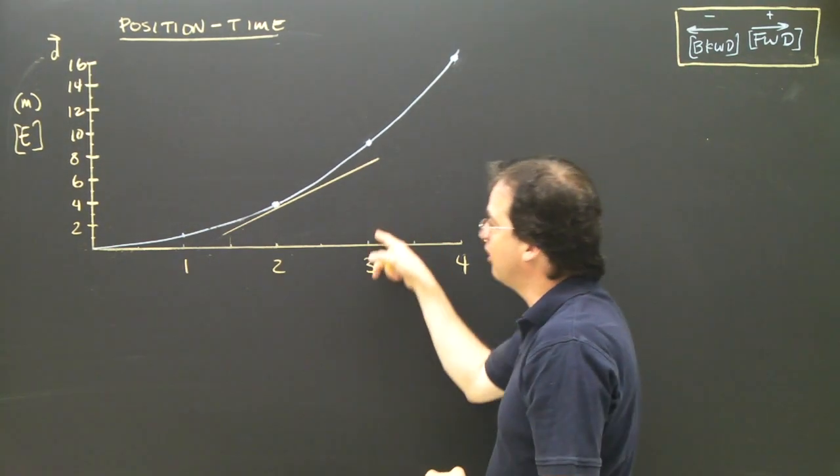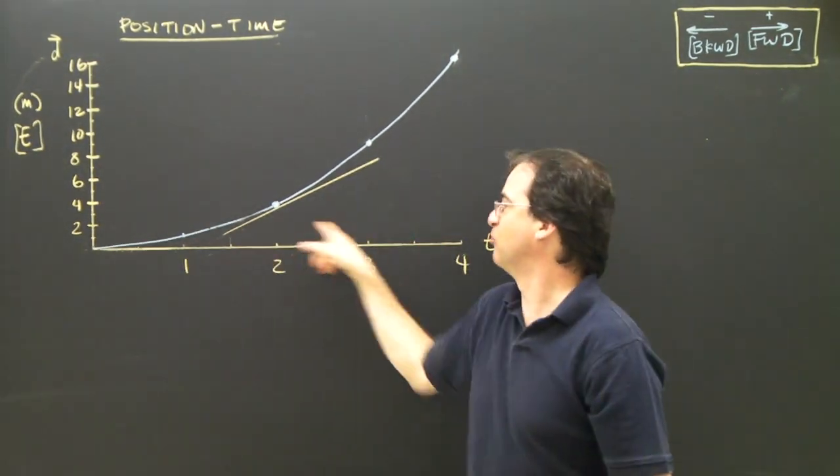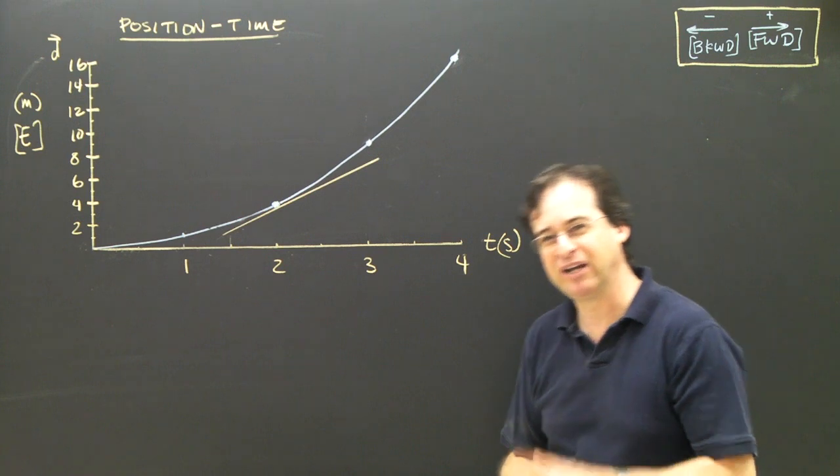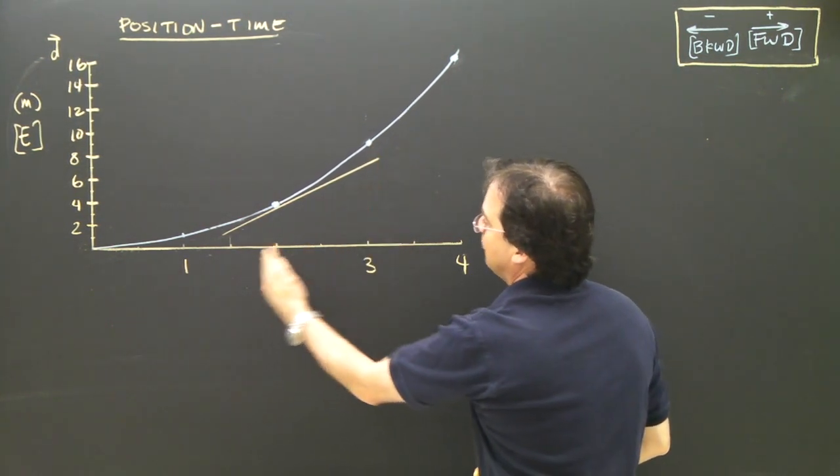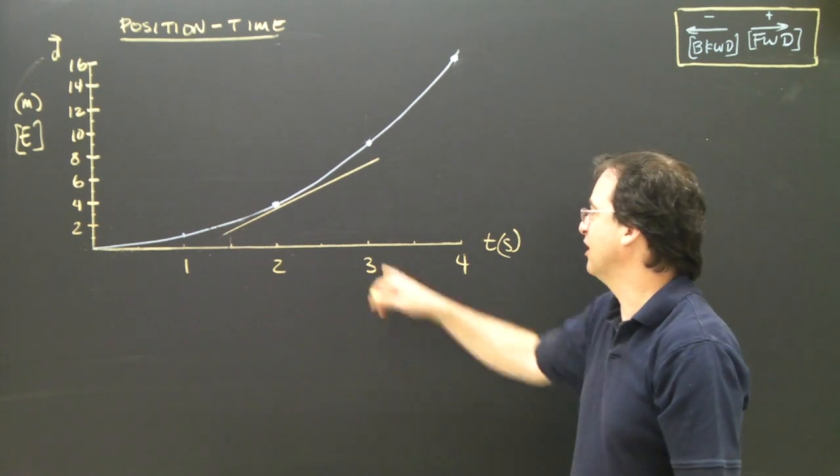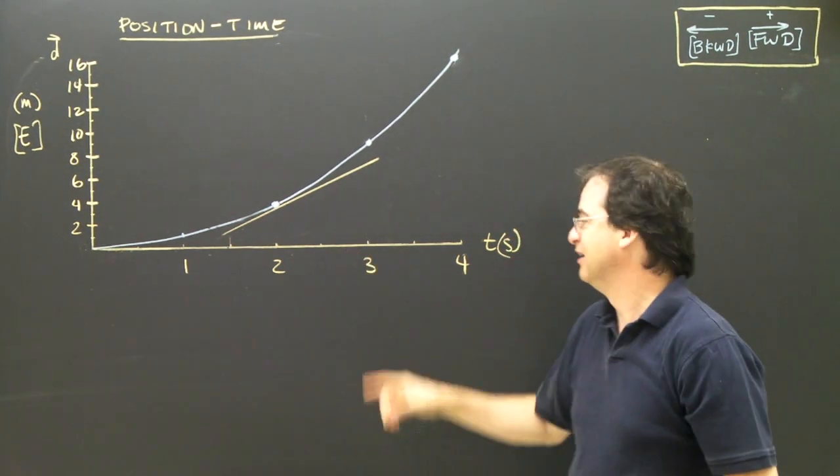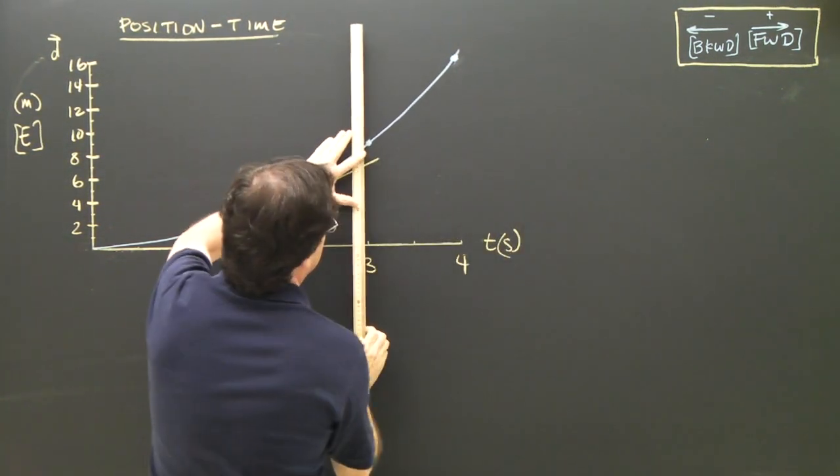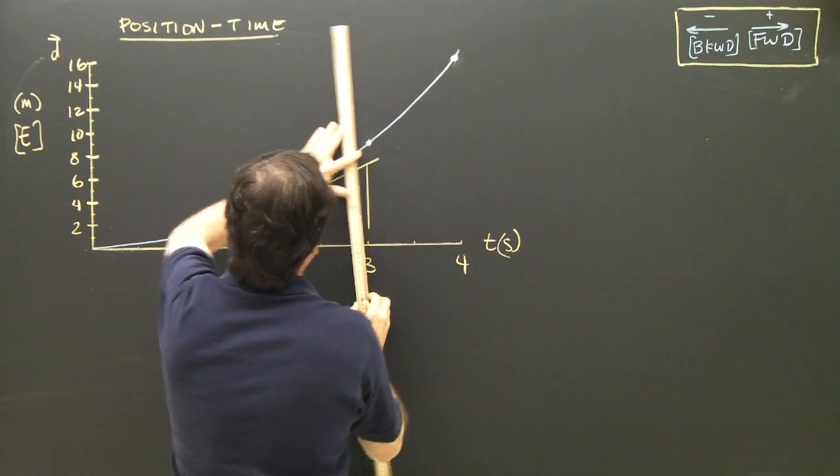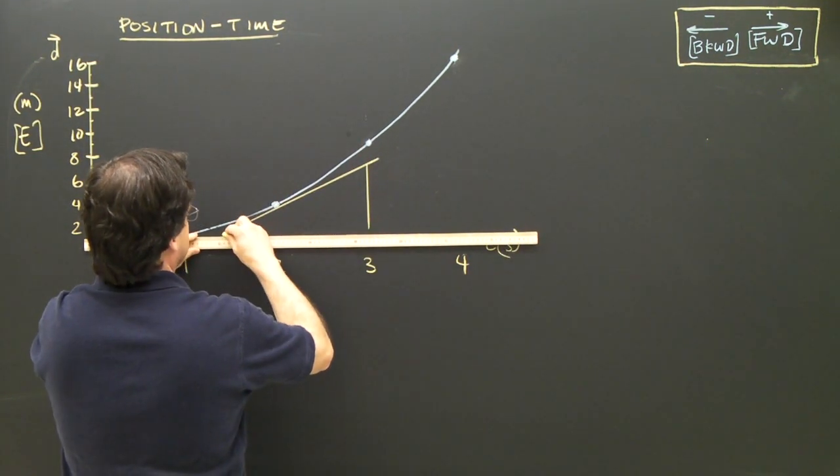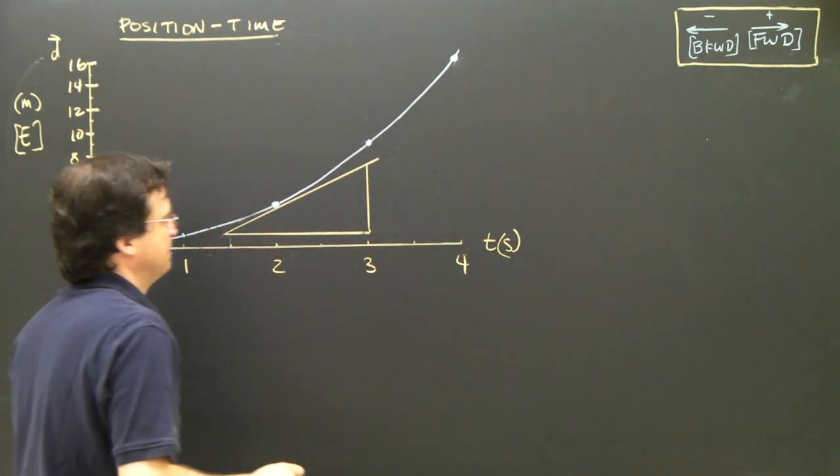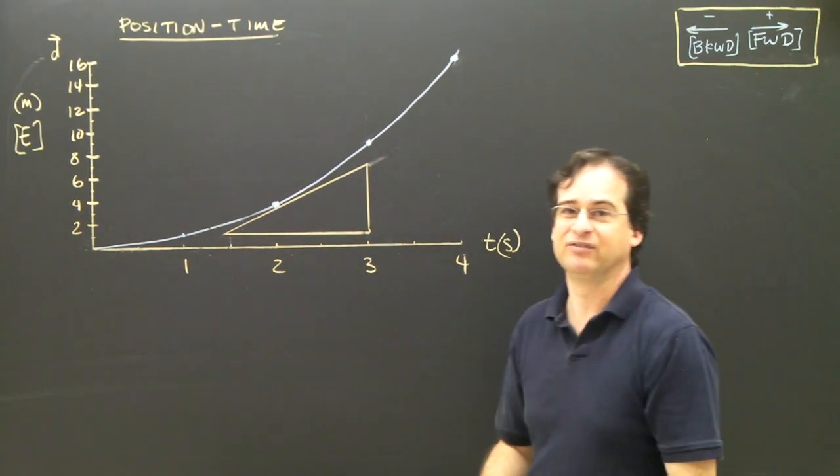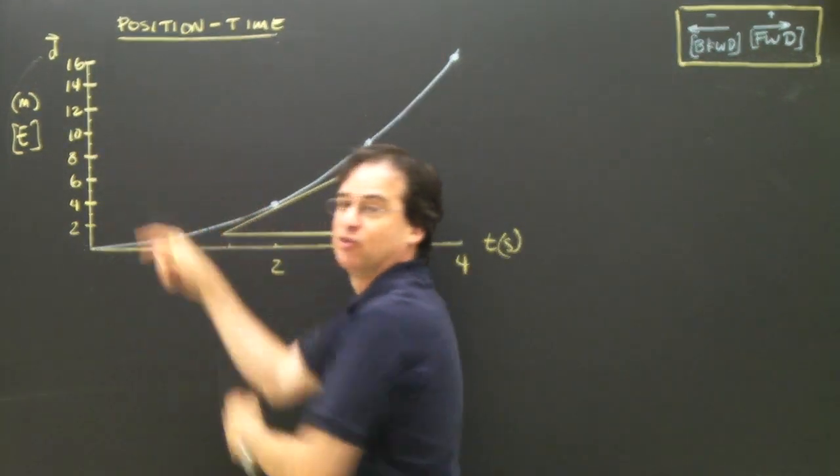So I've drawn a tangent here, and now what I want to do is create a triangle out of that tangent so I can get a rise and a run. What I suggest you do is make a triangle that goes up from some point on your time axis that's going to give you nice numbers to work with. I'm going to make my triangle up from the 3 and across from the 1.5.